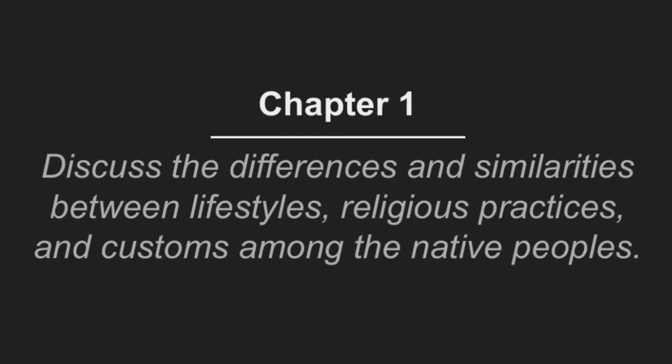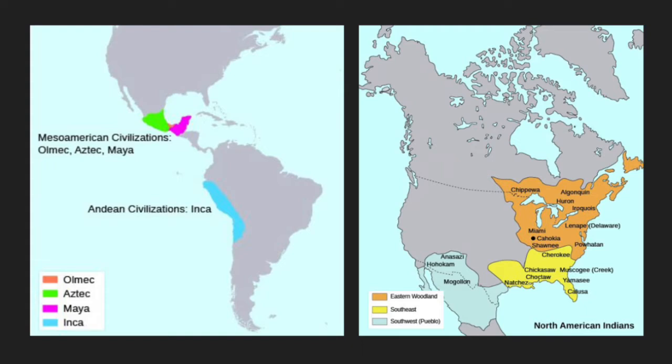Prior to colonization, the American continents were inhabited by Native people whose lifestyles and cultures differed from group to group and from civilization to civilization. Southern America was inhabited by multiple Mesoamerican and Andean civilizations, including the Olmec, Maya, Aztec, and Inca, who were all known for being more advanced and having social structures that are present in modern societies.